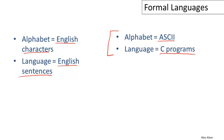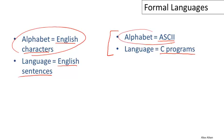The important contrast here is that the alphabet is interesting. Different formal languages have very different alphabets, and we can't really talk about what the formal language is or what strings we're interested in unless we first define that alphabet.